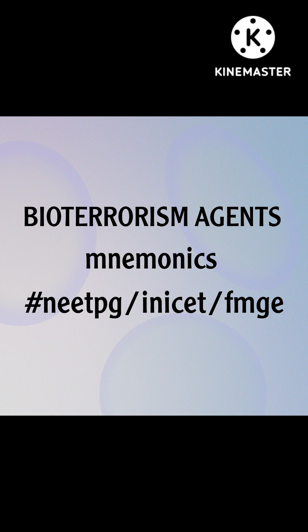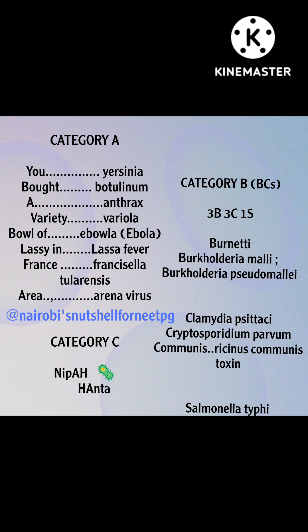Here's a short tale for remembering the bioterrorism agents. There are basically three categories: A, B, and C. For Category A, the mnemonic goes: 'You bought a variety bowl of lassi in France area.'